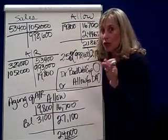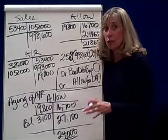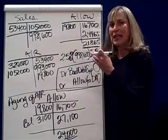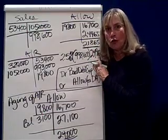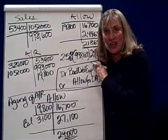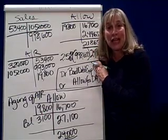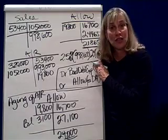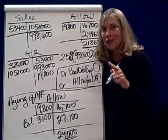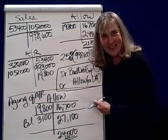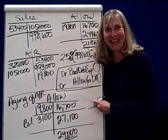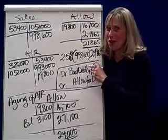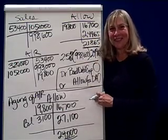So here's your choice in accounting: you can either use the percentage of sales method to estimate bad debts and make the adjusting entry, or you can use the aging method. Not both — one or the other.